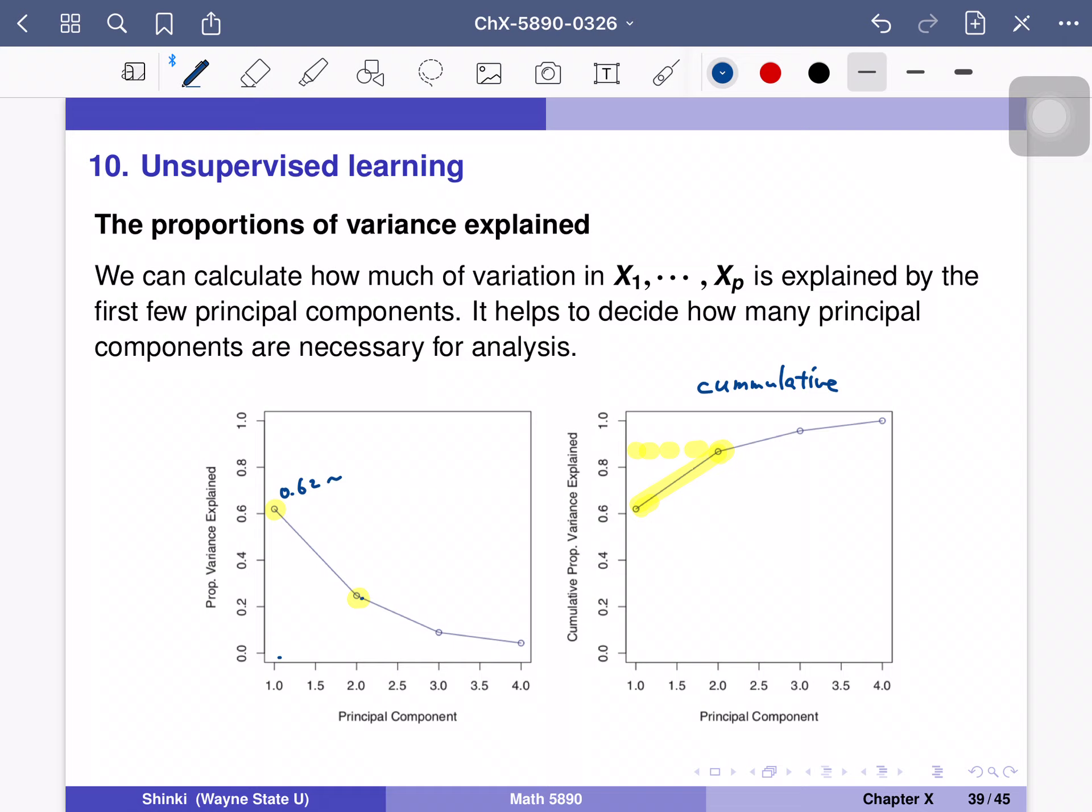So in this way, even if p is very large, such as 100, you can see that probably p is equal to 4 is sufficient to express most information, since almost 100% of variability is explained by the first four components.